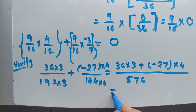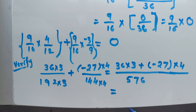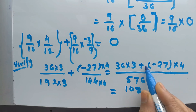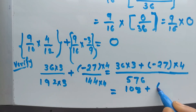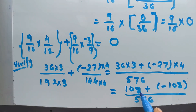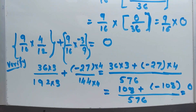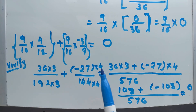So we get: 36 times 3 is 108, plus negative 27 times 4 is negative 108. That gives us 108 minus 108 over 576, which equals 0. Our answer is verified — both using distributive property and direct multiplication give 0.